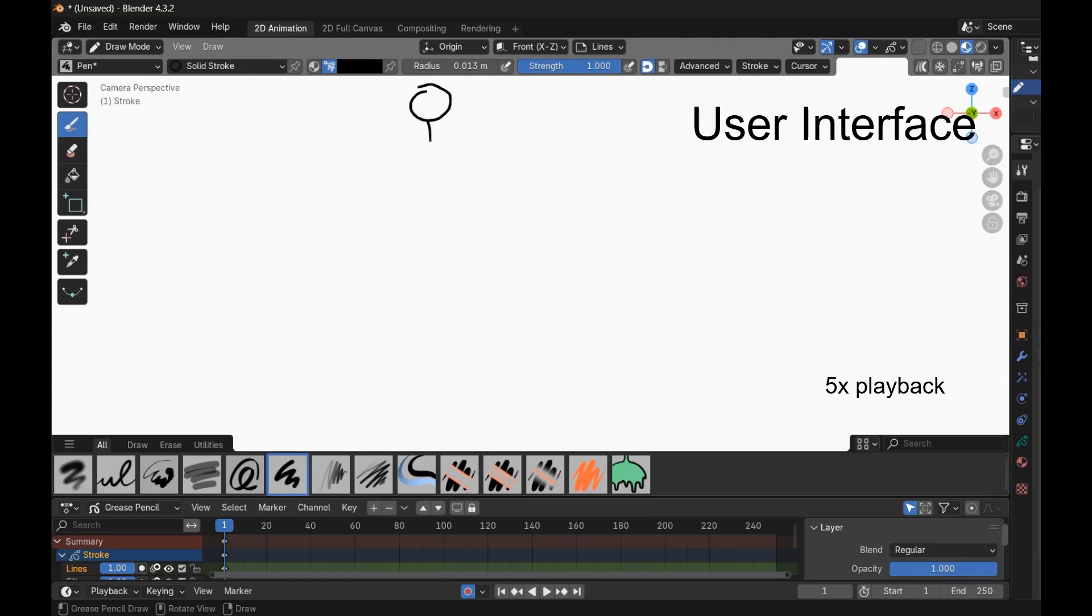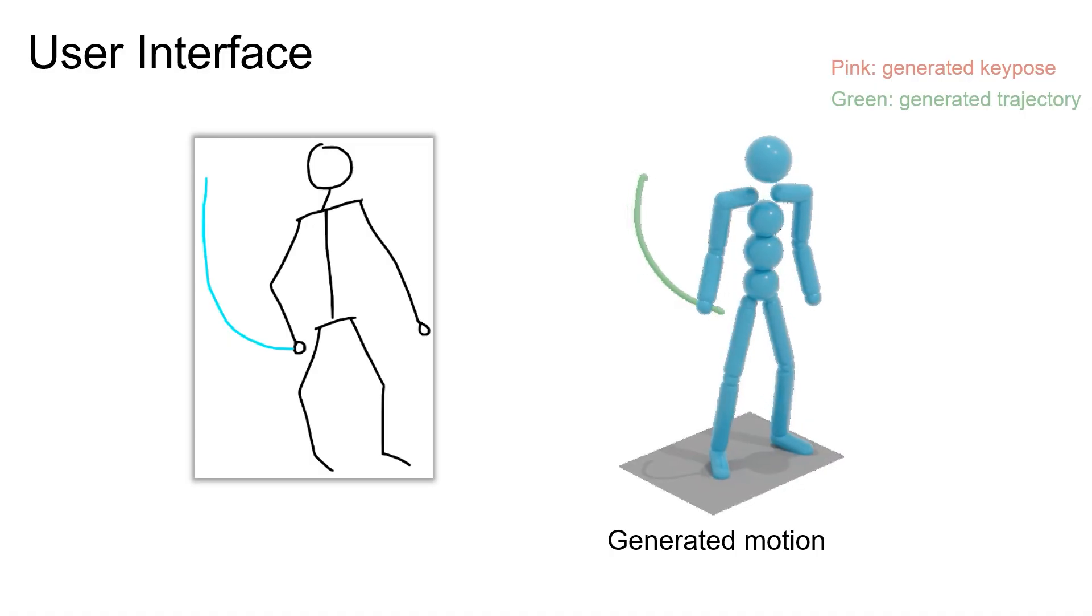We have developed a user interface as a Blender add-on that allows the user to draw the key pose and joint trajectories. We use Sketch2Pose to detect the 2D joints from the character strokes and trace the trajectory points. Our method generates its high-quality motion conforming to the sketch input in around 0.5 second.